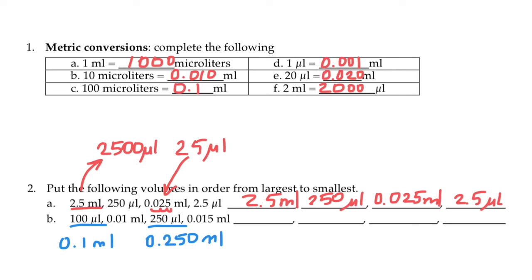And as you see, the biggest number here is going to be 250 microliters. Next one is going to be 100 microliters, which equal 0.1 milliliter. And then next one is going to be 0.015 milliliters. And the last one is going to be 0.01 milliliters.